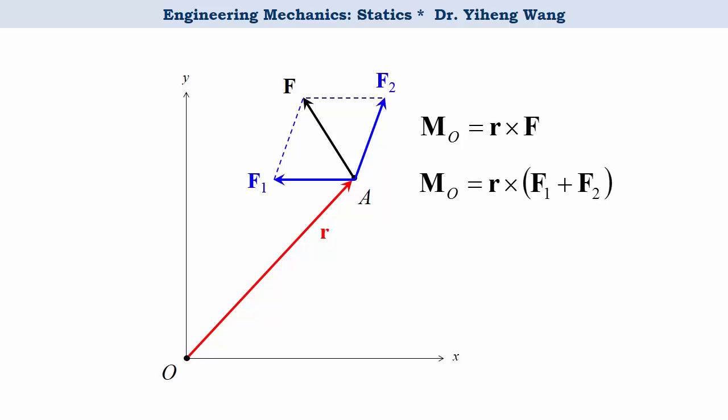Following the distributive law, M equals R cross F1 plus R cross F2. R cross F1 is simply the moment caused by the force component F1 about point O, and R cross F2 is the moment caused by force component F2 about point O.